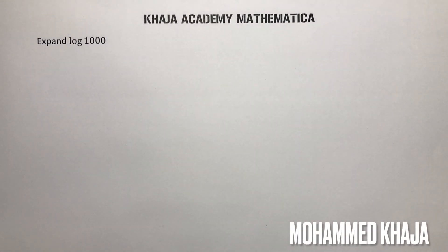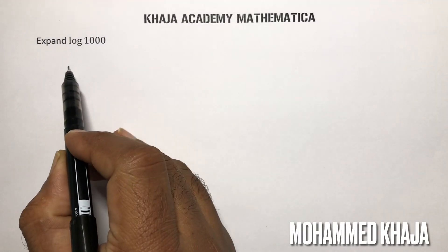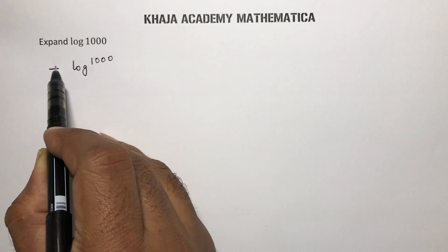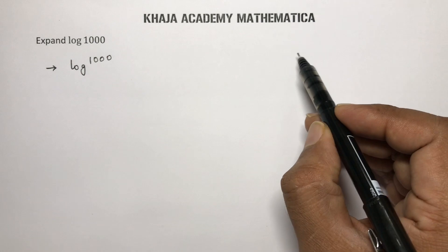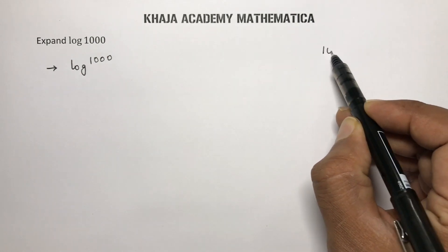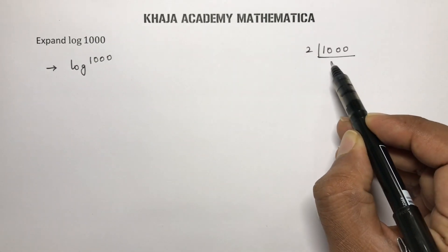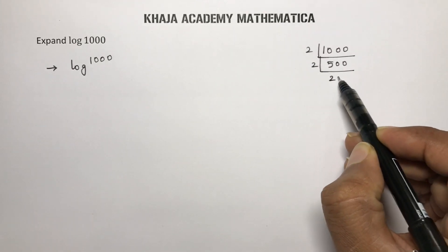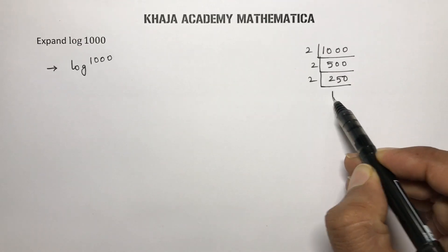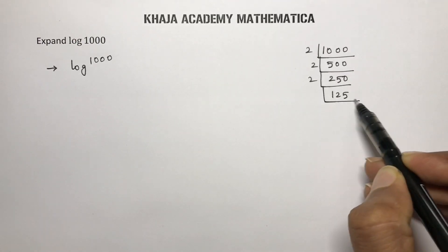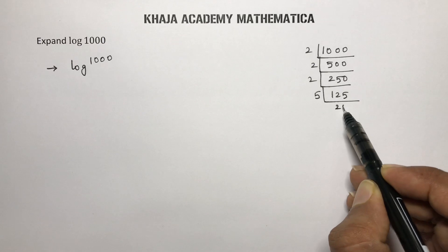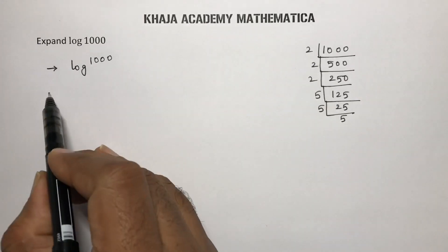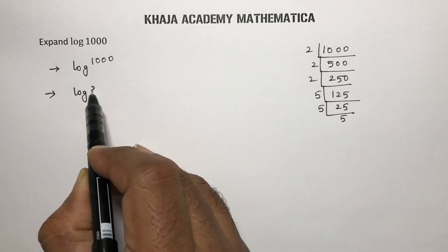Expand log 1000. To expand the value of log 1000, you can take base 10. First, find the prime factorization of 1000: that is 2 times 500, 2 times 250, 2 times 125, then with the 5 table: 5 times 25, 5 times 5. So 1000 can be written as 2 power 3 into 5 power 3.